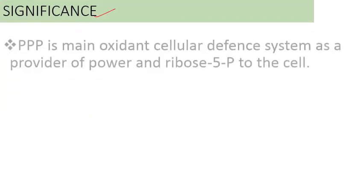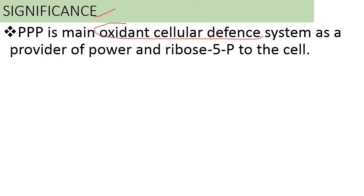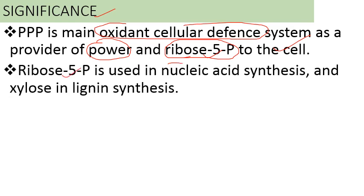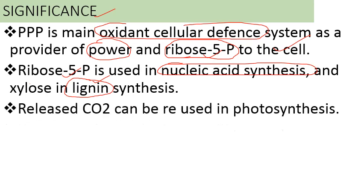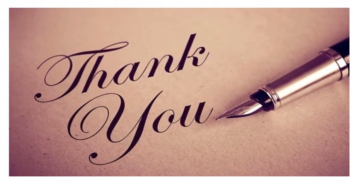The significance of the pentose phosphate pathway: it is the main cellular defense system providing NADPH energy and the five-carbon sugar ribose-5-phosphate to the cell. Ribose-5-phosphate is used in the formation of nucleic acids like DNA and RNA. Xylulose helps in the formation of lignin, a protective structure in plant cell walls. The carbon dioxide released during this process is used in photosynthesis inside the plant. This concludes today's discussion — if you have any questions or suggestions, please leave them in the comment section. Thank you and have a nice day.